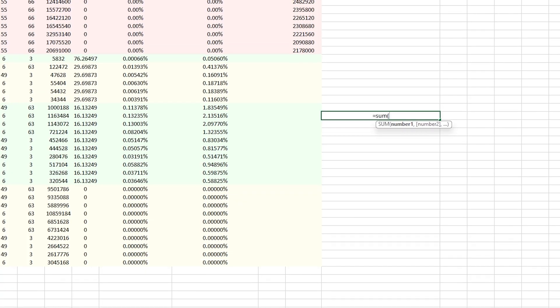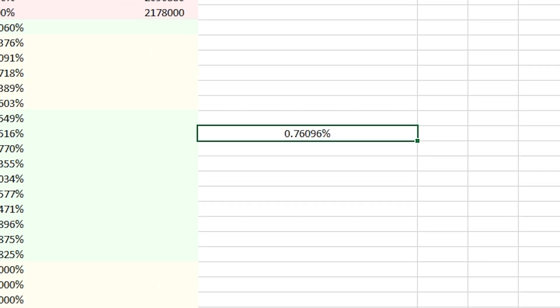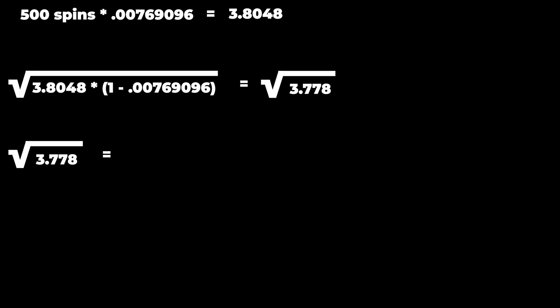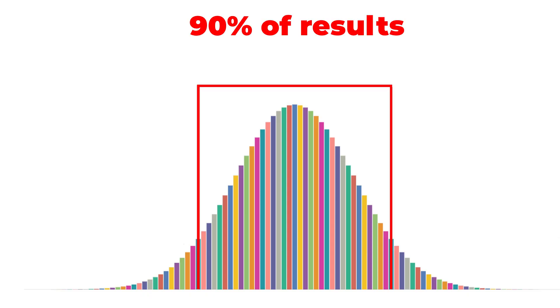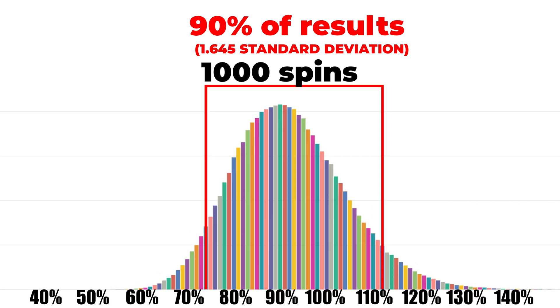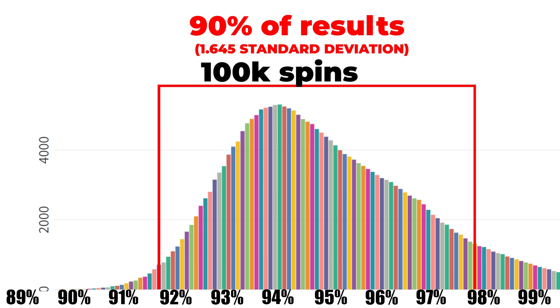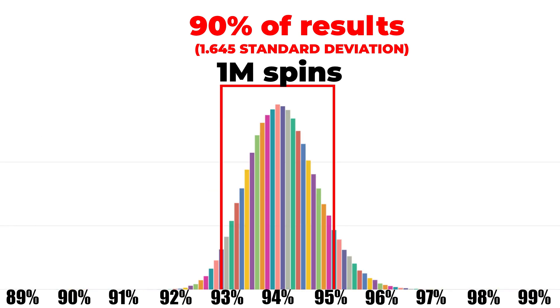So when people say they spun a slot machine 500 times and didn't get into the bonus round and it has to be rigged, we have to look at what the odds are to get in the bonus round, calculate how many standard deviations away their results were, and then calculate what the odds of that happening were. One concept on slot machines that a lot of people talk about is the 90% confidence factor — that's how manufacturers quantify the volatility of a slot machine. It means that 90% of the results are going to fall within a certain range, which is the same as 1.65 standard deviations.